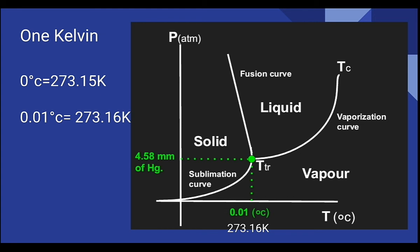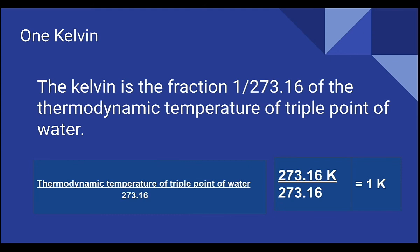So if we divide 273.16 Kelvin, which is the thermodynamic temperature of the triple point of water, by 273.16, then we get 1 Kelvin. So the standard definition of Kelvin is: